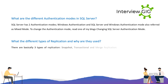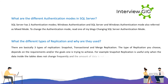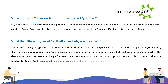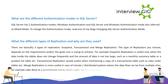There are three types of replication: snapshot, transactional, and merge replication. Snapshot replication is useful when data inside tables does not change frequently and the amount of data is not too large, such as a monthly summary or product list table. Transactional replication is useful for maintaining a copy of a transactional table such as sales order tables. Merge replication is more useful for remote distributed systems where data flow can come from multiple sites, such as sales at promotional events not always connected to central servers.